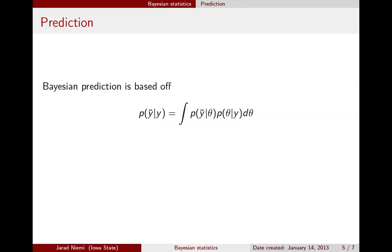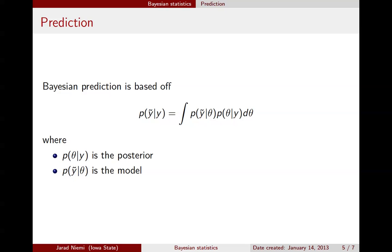The next goal for statistical inference is prediction. Bayesian prediction is based on y-tilde — our future data, which is the unknown — given the data that we observed, y. We take the integral of the density of future data given the parameters, times the density for the parameters given the data, and integrate out those parameters. Here p(theta|y) is the posterior, and p(y-tilde|theta) is just the model.